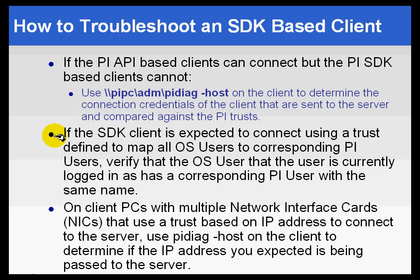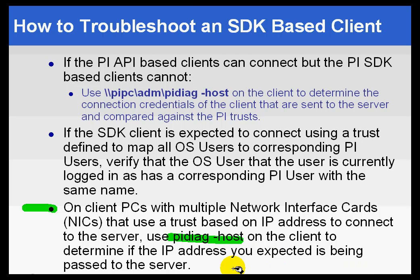A second thing to look at: if you do have a trust defined that maps all Windows users to the corresponding PI users, just make sure that those PI users actually exist — that's a fairly common mistake. People don't know that those have to match one for one. Finally, if you have multiple network interface cards on a computer and you're using a trust based on IP address to connect to the server, again use PI Diag-host. That's going to report to you what the actual IP address is that will be passed to the server — the IP address you see there is in fact the IP address that a PC with multiple network interface cards is going to be passing to the server.